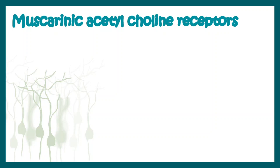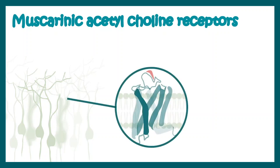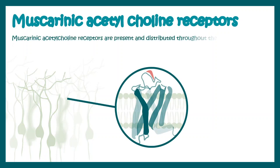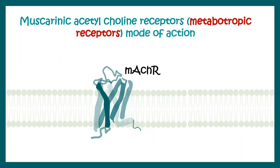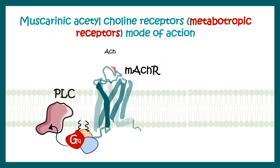Muscarinic acetylcholine receptors are other examples of metabotropic receptors. These are found in the cholinergic system and are present throughout the central nervous system in the post-synapse. Also, outside the nervous system — in the neuromuscular junction and in the peripheral nervous system — we can see muscarinic acetylcholine receptors. Upon acetylcholine binding, they trigger a GQ-mediated response which can further activate phospholipase C, thereby activating second messengers like IP3 and DAG, which have their own downstream effects.